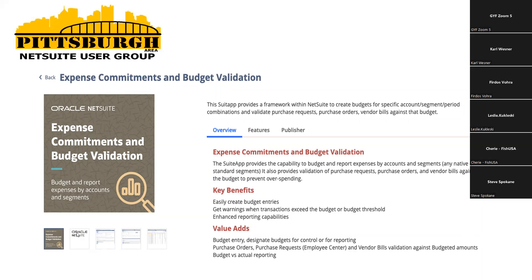I'm not going to spend too much time reading through this summary. You'll see this if you navigate to the suite apps and bring this page up. In summary, this process is going to allow you to verify your committed and your consumed expense on both purchase orders, purchase requests — purchase requests being if the employee is entering it — and your vendor bills against the budget. You can think about this process as helping you avoid overspending prior to finding out about it at month end when you go to compare against the budget.